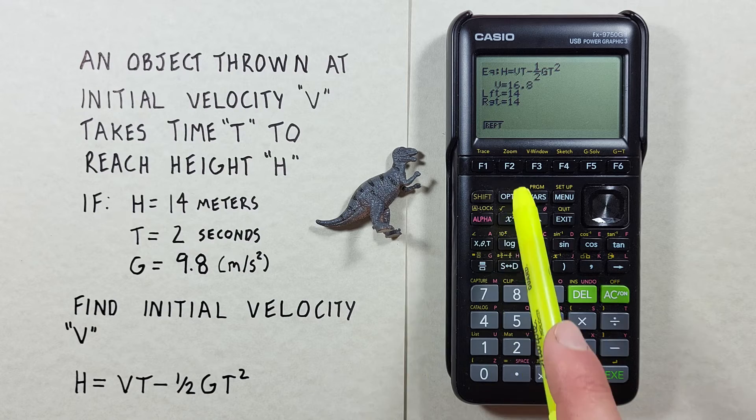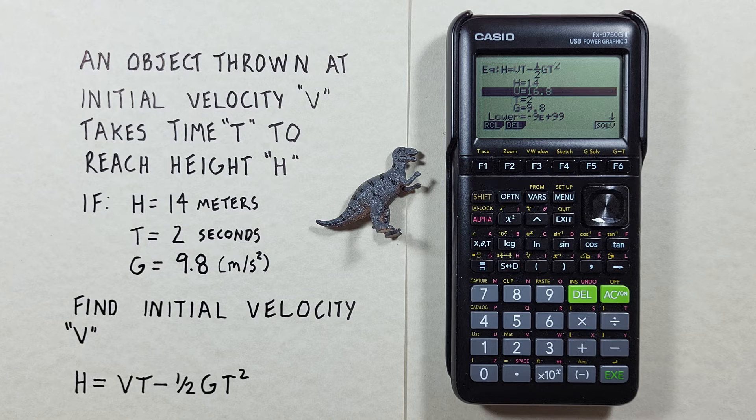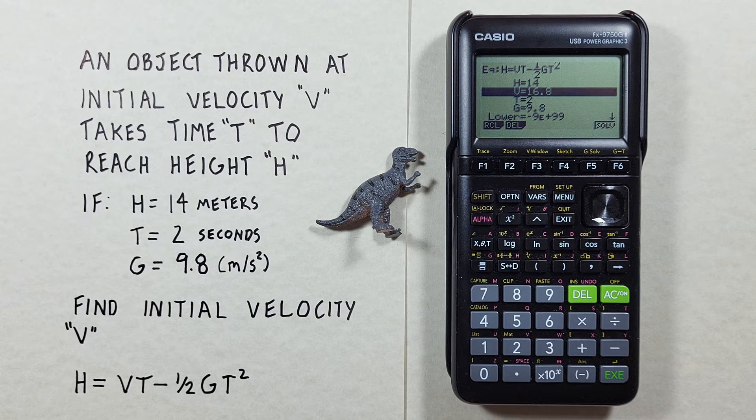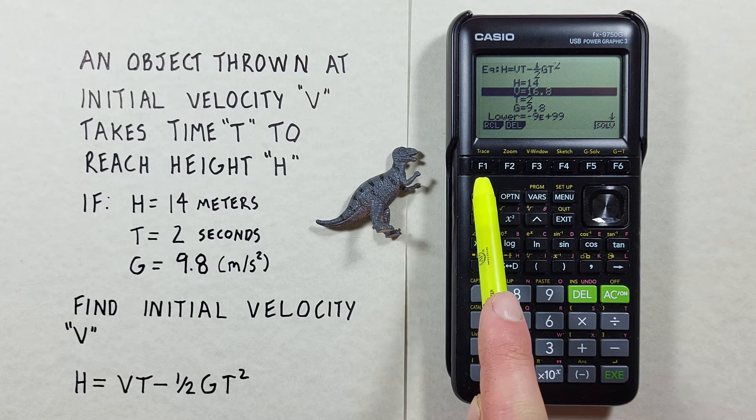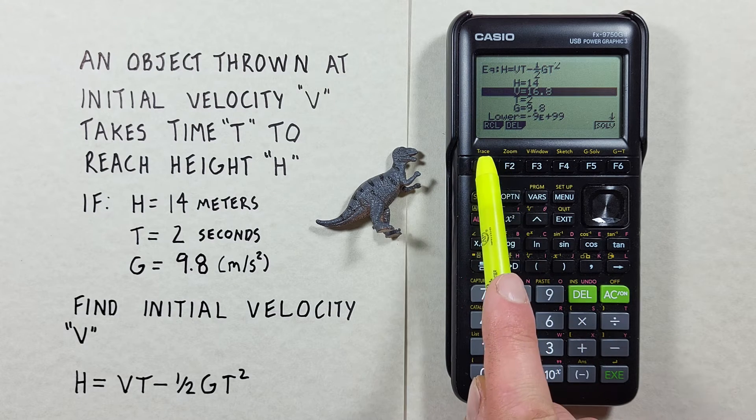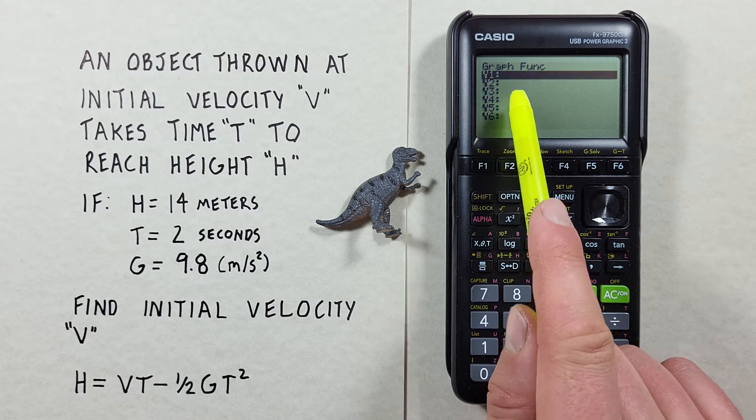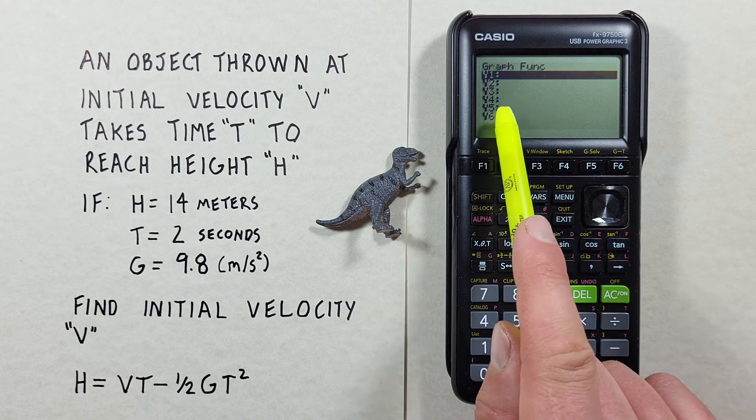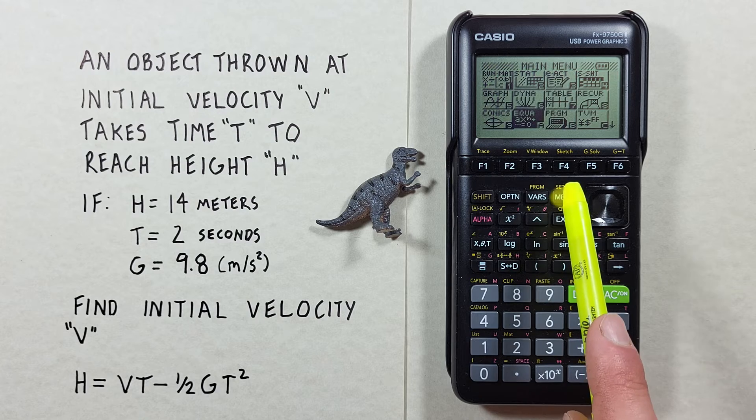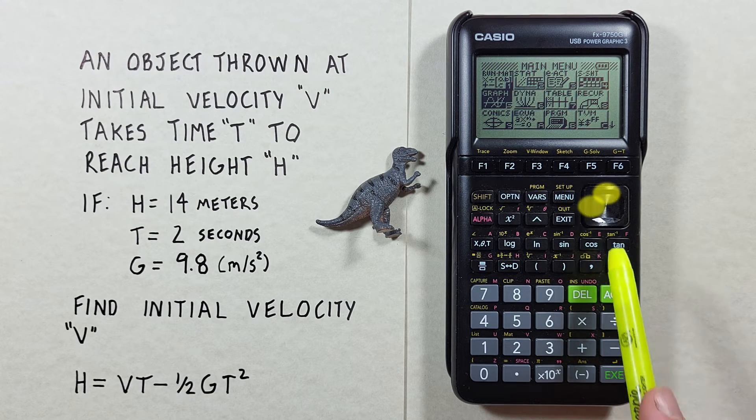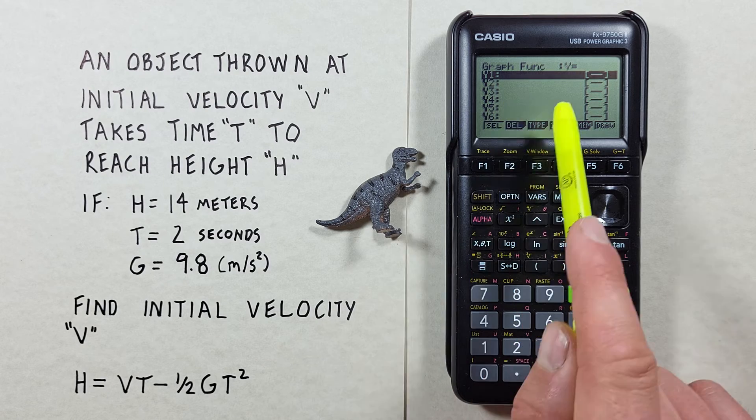We can go back with the F1 key to our screen here. But what if we wanted to enter a number of formulas for later use? Well, we see here at this screen, we see F1, RCL, or recall. If we press that, that takes us to our graphing function menu here, where we can choose equations that we have saved. Right now, there's nothing saved here. But if we go to menu, scroll over to graph, and select it, we can enter our new formulas or equations here.